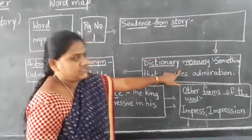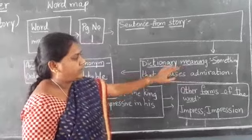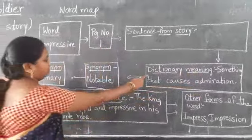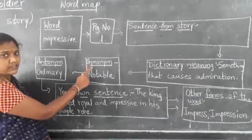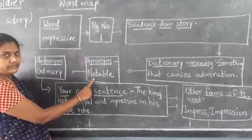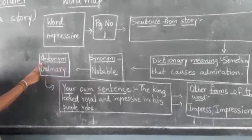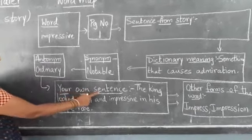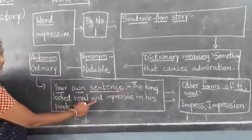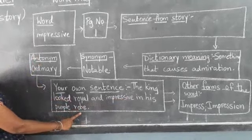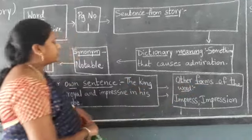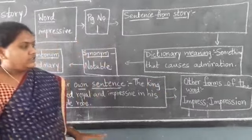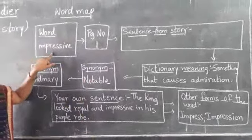Then from here I go to the next section: dictionary meaning. That means one meaning from the dictionary — that is 'something that causes admiration.' Next, followed by a synonym — another similar meaning for the word impressive — that is 'noble.' Next, followed by antonym: 'ordinary.' Antonym means the opposite. Followed by your own sentence — the king was impressive. And other forms to write for impressive: impress and impression. So this is the word map for the word impressive. Now open your workbook.